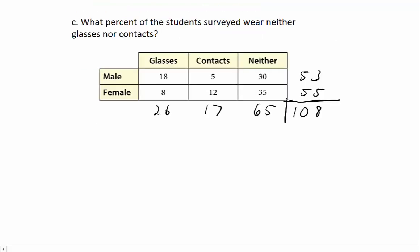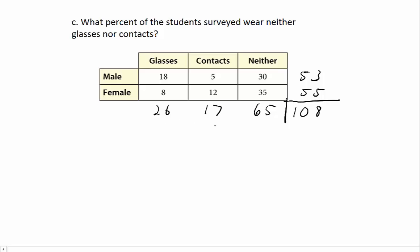Question C: What percent of the students surveyed wear neither glasses nor contacts? I've already calculated the marginal totals for both rows and columns. There are 53 males and 55 females in the survey, 26 students who wear glasses, 17 who wear contacts, and 65 who wear neither. There are 108 students total in the survey — we can get that by adding the column totals, 53 plus 55, or adding the row totals, 26 plus 17 plus 65.